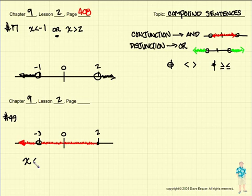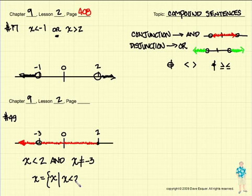So if we had to write this in language arts, it would be x is less than two, and x can't be equal to negative three. So that would be the way we would write this. We could get fancy and we could do this. x is such that, squiggly brackets, x has to be less than two, and x cannot be equal to three. So there would be our solution. That's it for today. We'll see you all tomorrow.